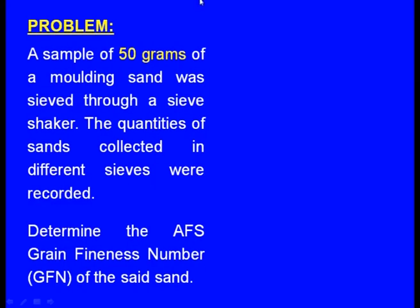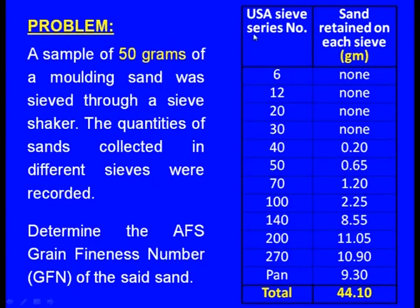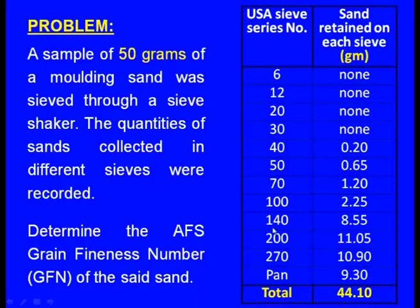Let us take a problem: a sample of 50 grams of molding sand was sieved through a sieve shaker and the quantities collected in different sieves were recorded. Determine the AFS grain fineness number. The sieves are assigned numbers 6, 12, 20, 30, 40, 50, 70, 100, 140, 200, 270, and finally the pan — totaling 11 sieves plus the pan.